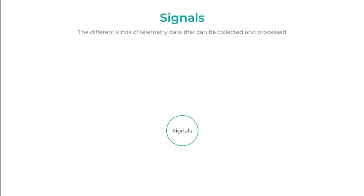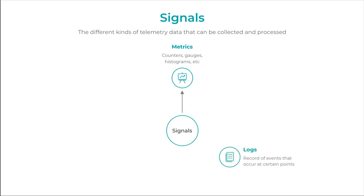So what are signals? Signals represent the different kinds of telemetry data that can be collected and processed. These are key to understanding the performance and behavior of your applications. In open telemetry, these include metrics, logs and traces.